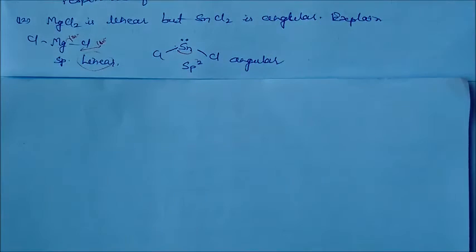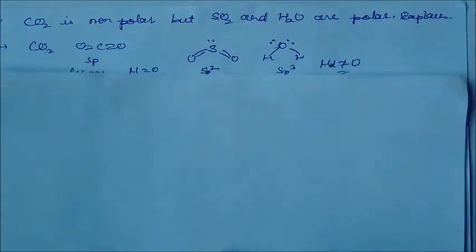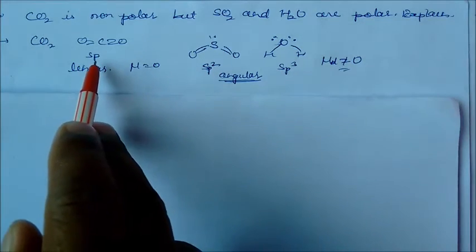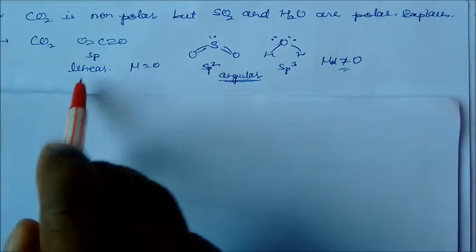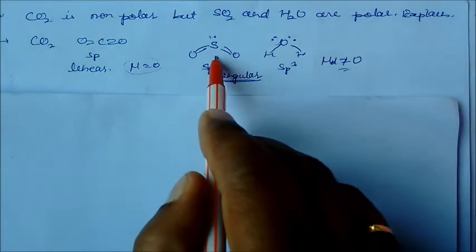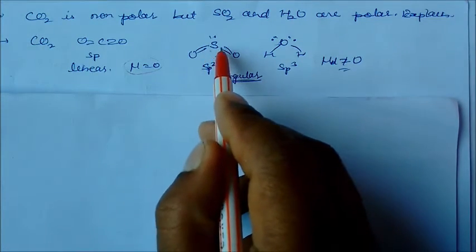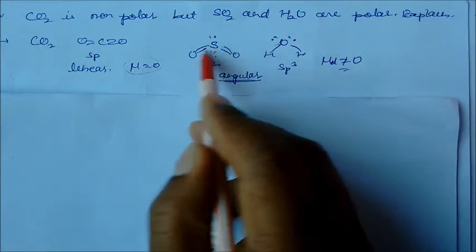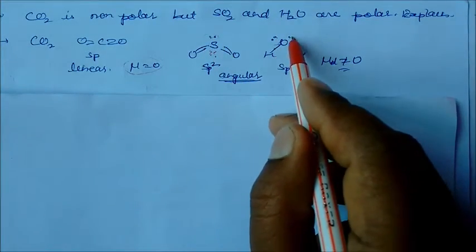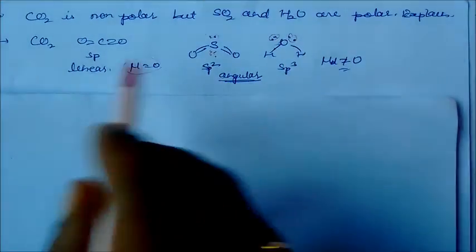Carbon dioxide is non-polar but SO2 and water are polar. Explain. If you see here, carbon dioxide is sp hybridization, this is linear structure. That's why its dipole moment is zero. When in case of SO2, this is sp2 hybridization; H2O is sp3. These two are angular in shape. Here angles are there because it has six electrons, two is engaged in bonding with oxygen and one is lone pair. Here we have two lone pairs, so hybridization will be sp3 and sp2. That's why this is angular and this is linear.